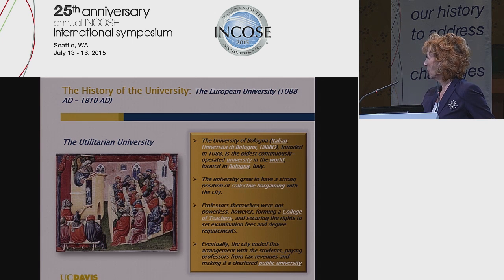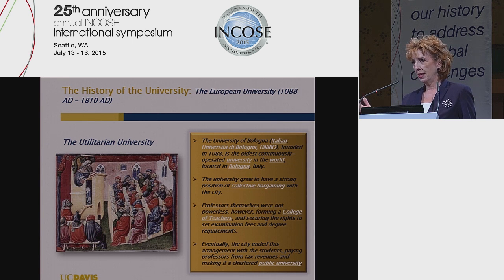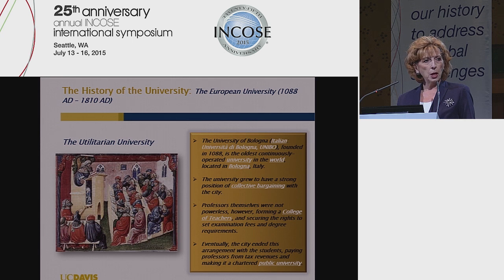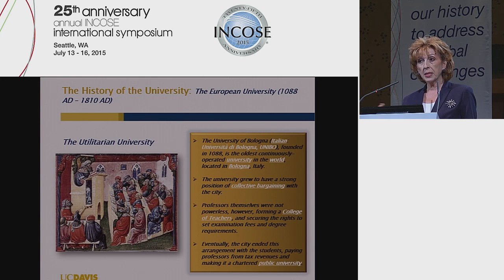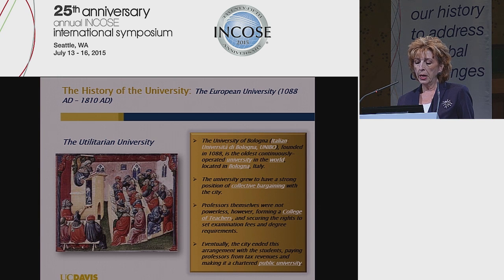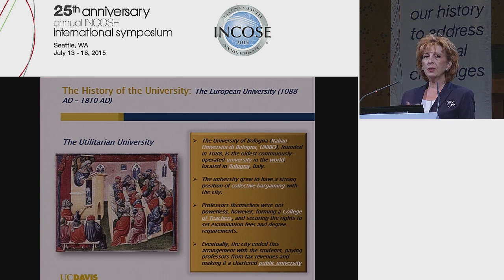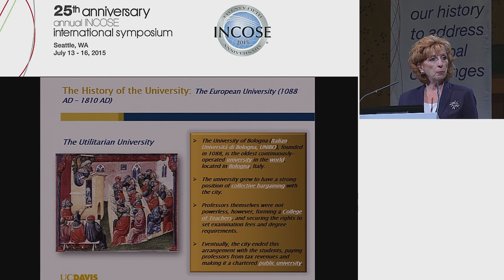Eventually there was better coordination — students organized and were able, because they were paying taxes, to attract more faculty. You can see here a depiction of how instruction was delivered, very similar to some of our classrooms today. They developed a system where students paid faculty primarily to teach law. The faculty organized into a college of teachers, and eventually the city — to avoid constant bargaining between students, faculty, and the city — decided to pay the professors from taxes. That's how the public university was created, with a very utilitarian mission.